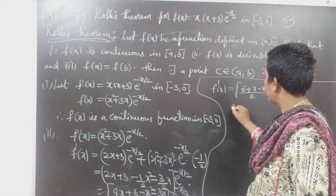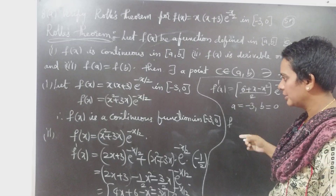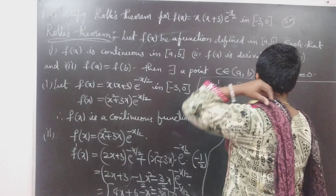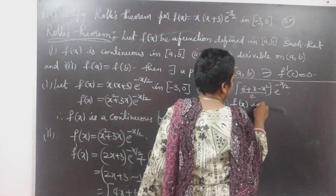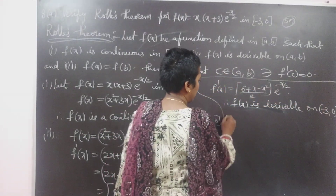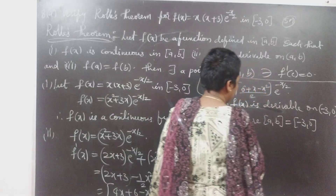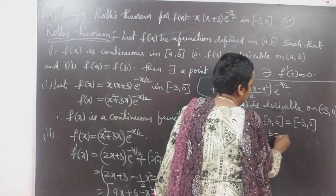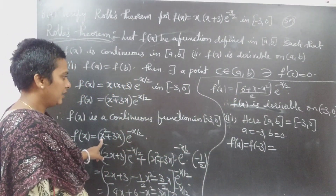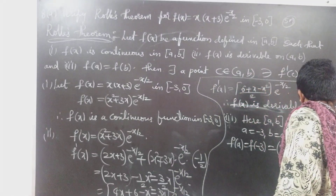Now, here A is equal to -3, B equal to 0. We can verify this is the derivative — second condition is satisfied. F(A) equal to F(-3) equal to: (-3)² + 3×(-3) equals 9 - 9 = 0, multiplied by e^(-3/2), which is equal to 0. So F(A) = 0.